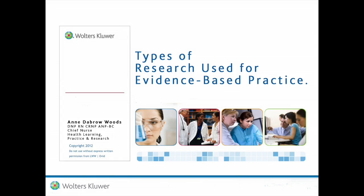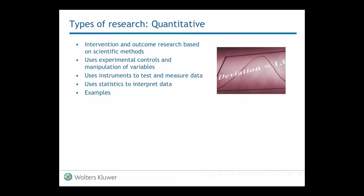Now, there are different types of research evidence out there, and it's really important that we understand the different types. There's quantitative research, and quantitative research is research that looks at interventional studies and outcomes research. It's the type of studies that you do a lot of statistical analyses with.